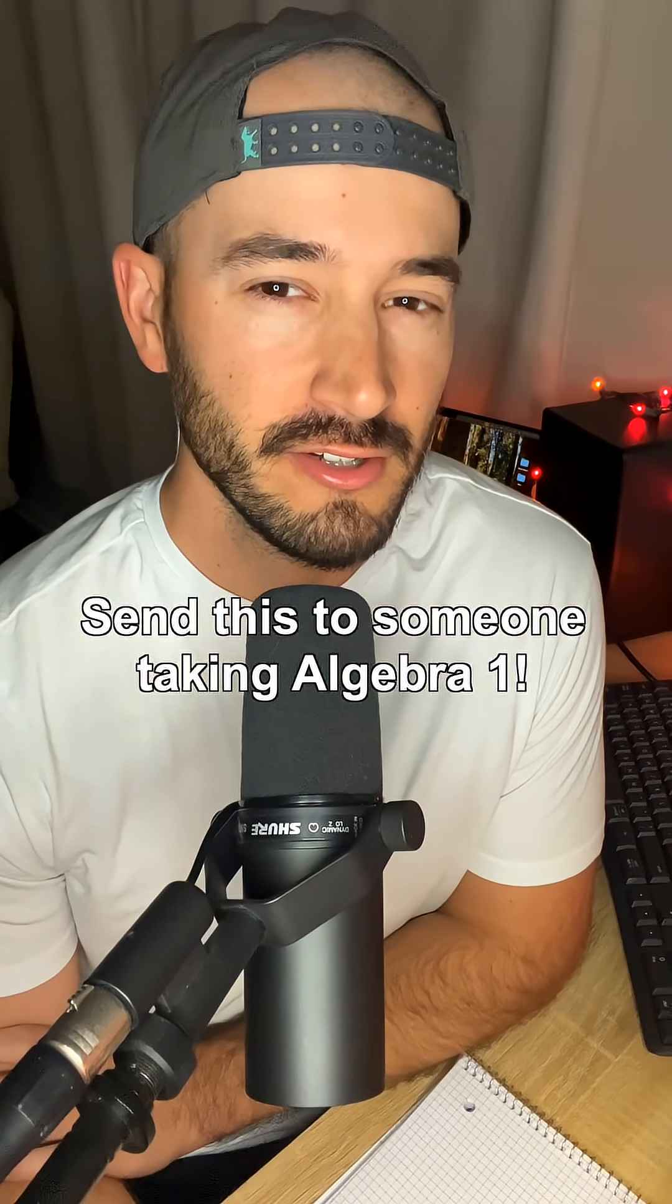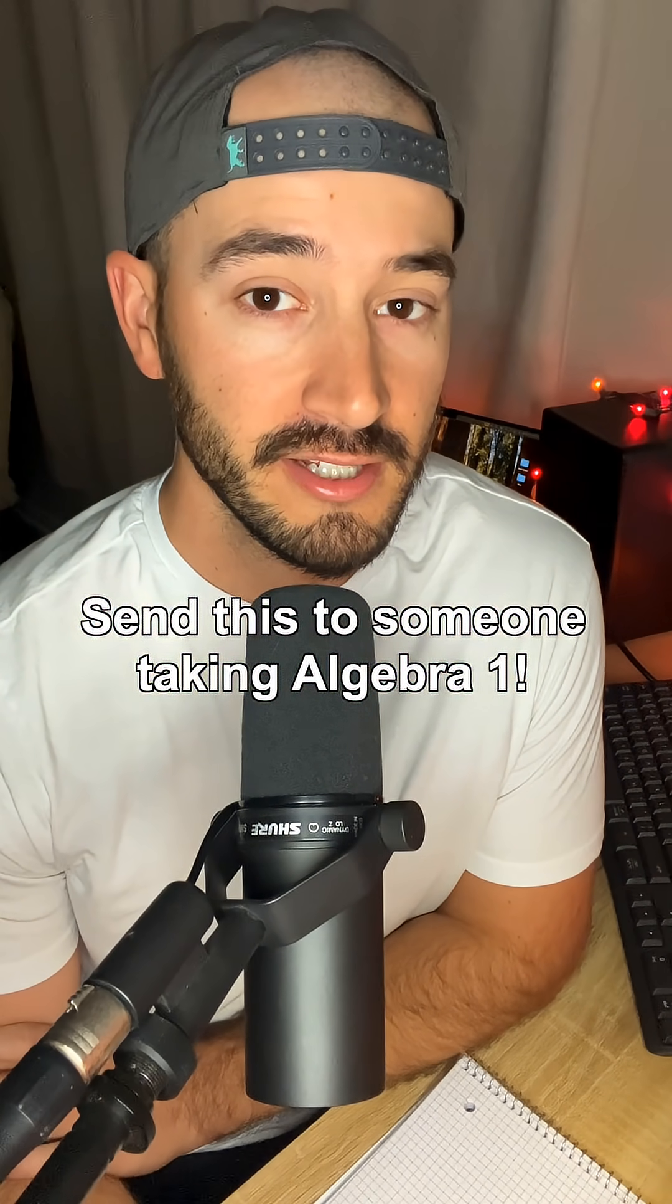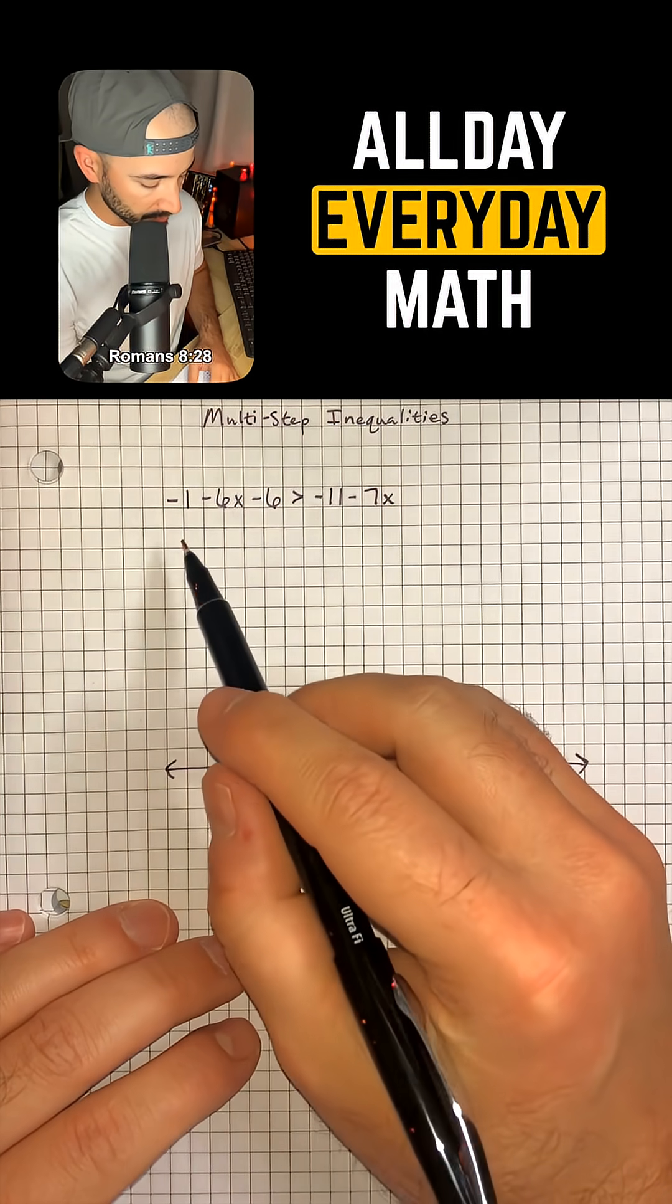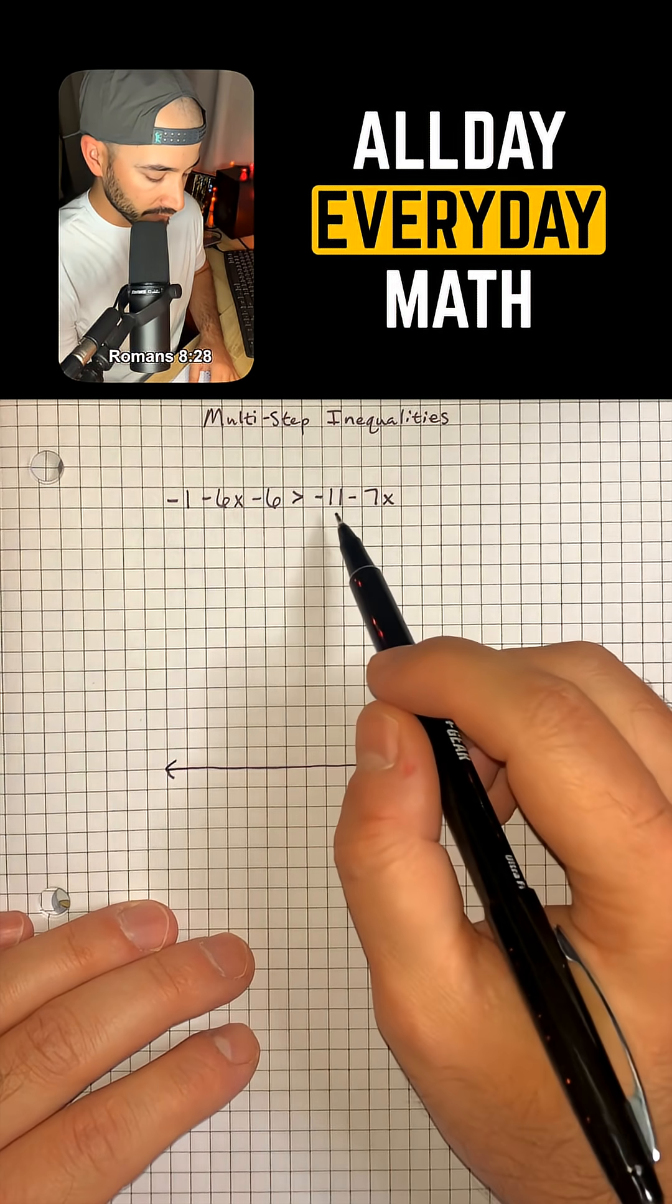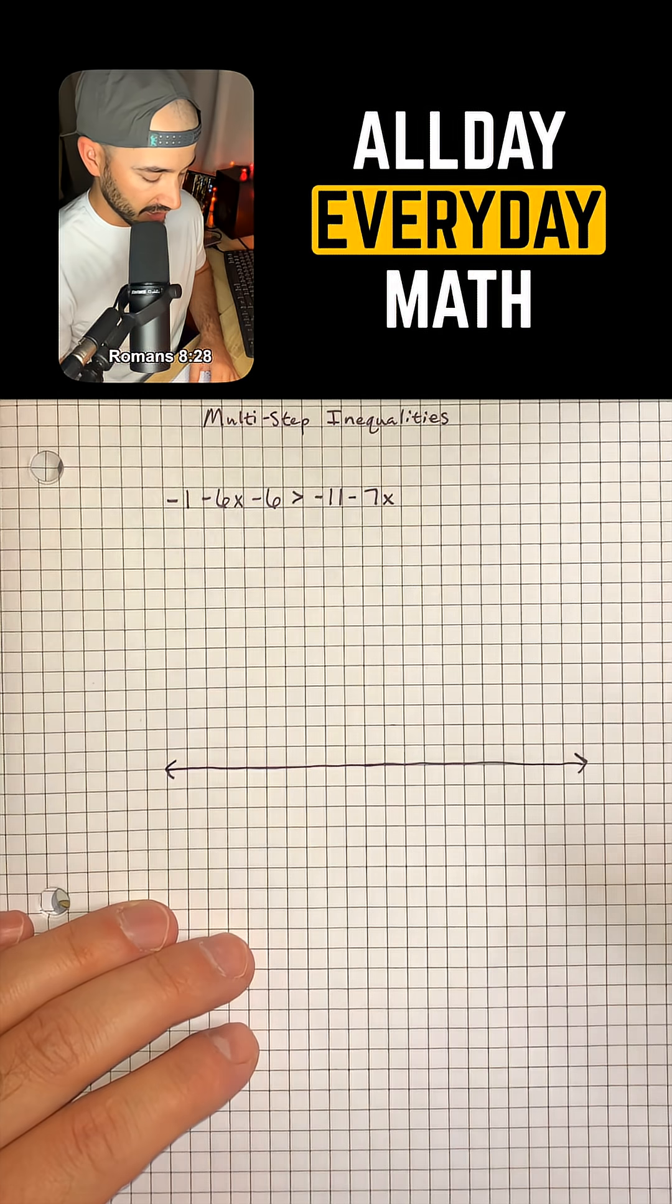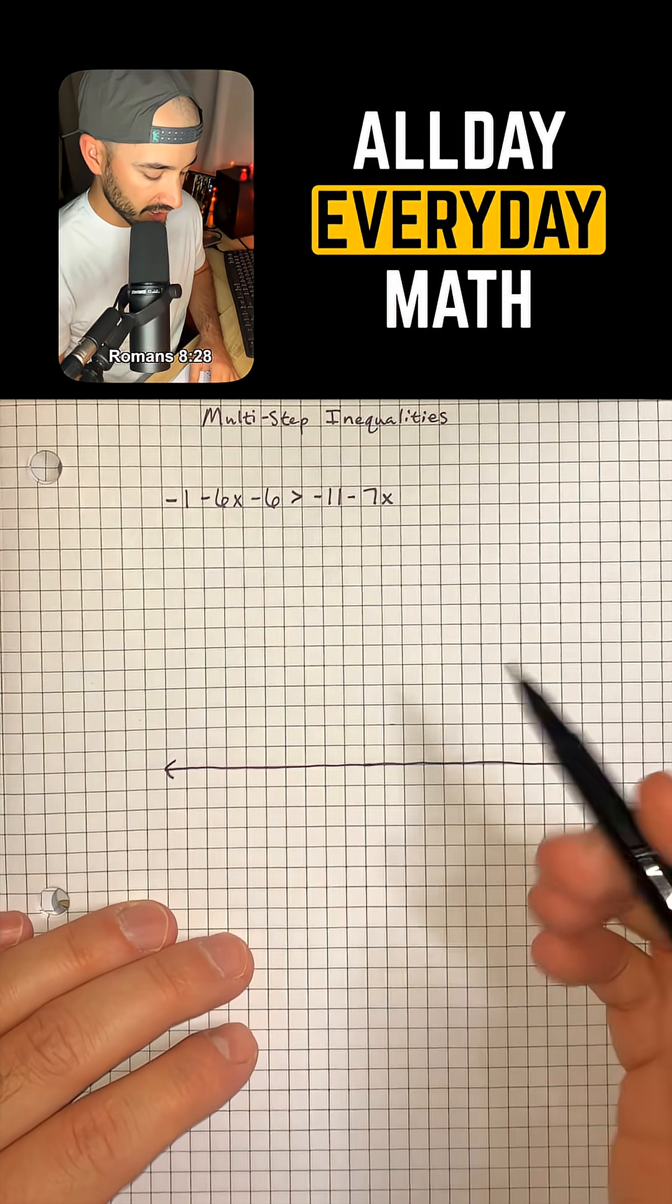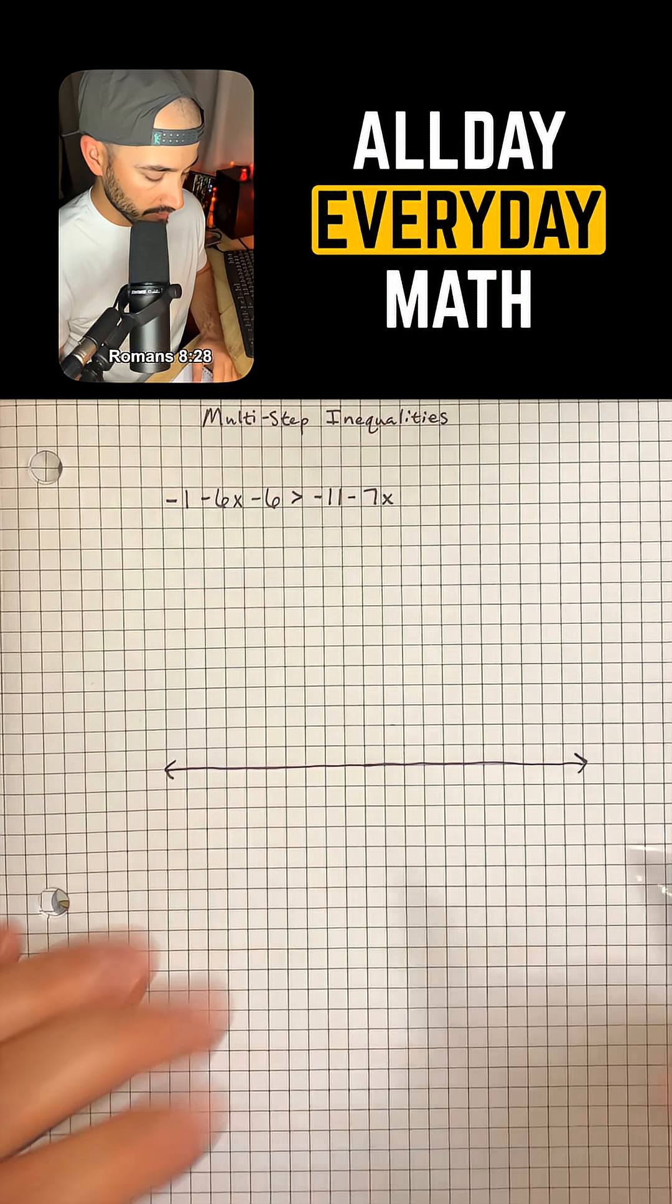If you're taking Algebra 1 this year and you still don't know how to solve multi-step inequalities, don't worry, I got you. We have the problem: negative 1 minus 6x minus 6 is greater than negative 11 minus 7x, and we want to solve this inequality for x and then graph it on our number line.